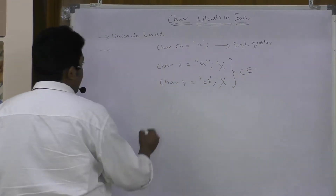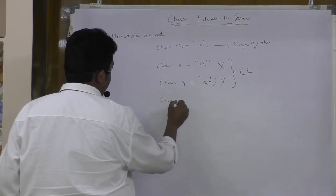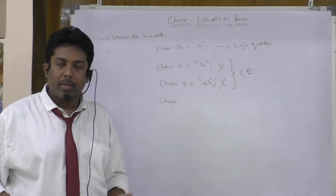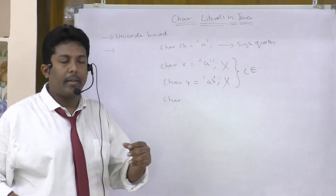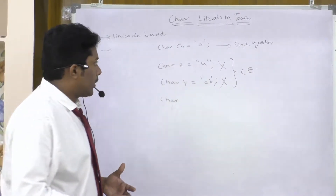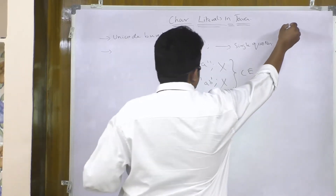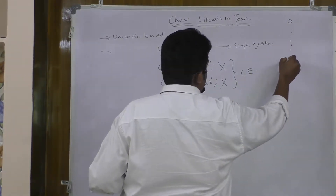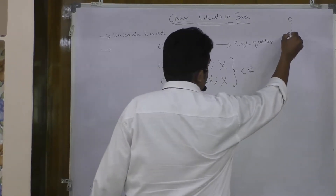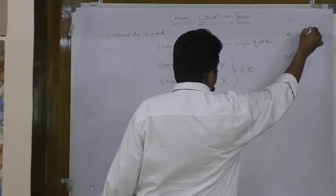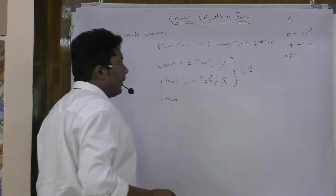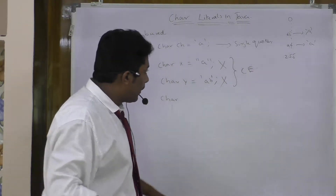In Java, C, or C++, characters are always represented with some integral value. In C or C++ we call those integral values ASCII codes; in Java we call them unicode values. Starting from 0 to 255, all the ASCII values remain the same — for example, 65 means capital A, 97 means small a.